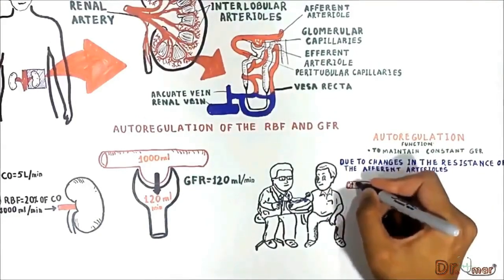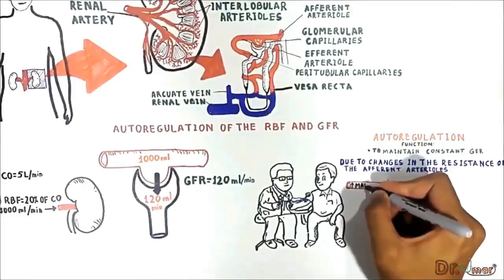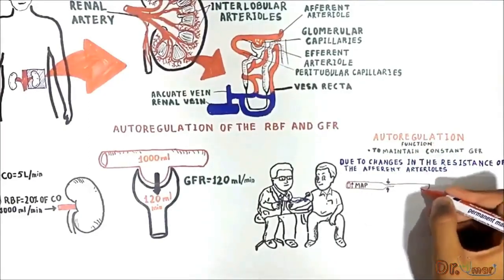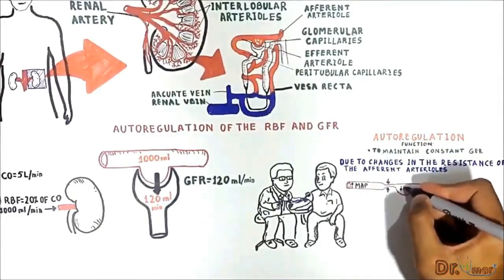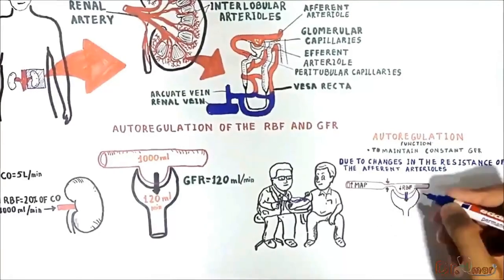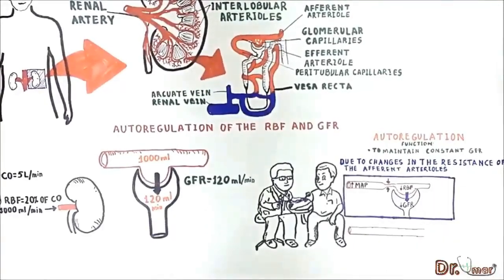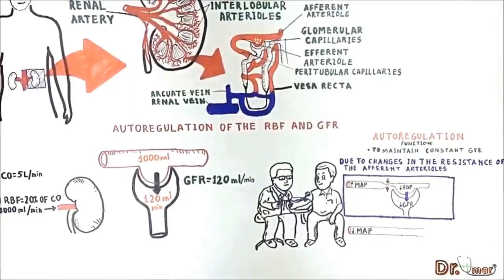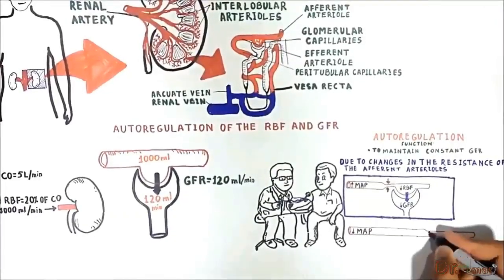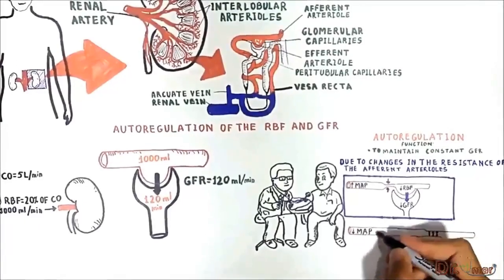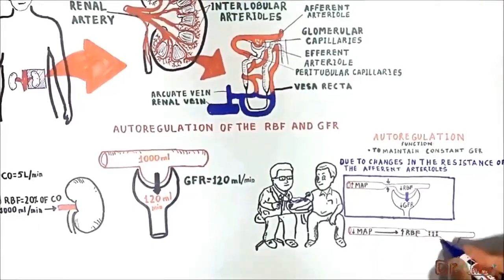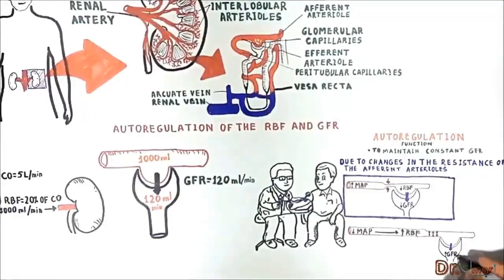In a nutshell, if the mean arterial pressure increases, the afferent arterioles constrict, preventing an excessive increase in renal blood flow and GFR. In the opposite case, if the mean arterial pressure decreases, the afferent arterioles dilate, decreasing resistance and increasing renal blood flow. An increase in renal blood flow increases GFR.